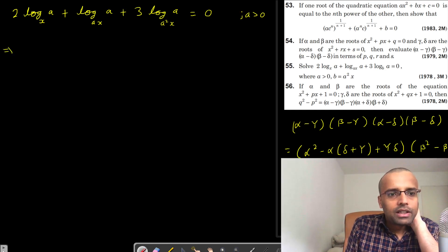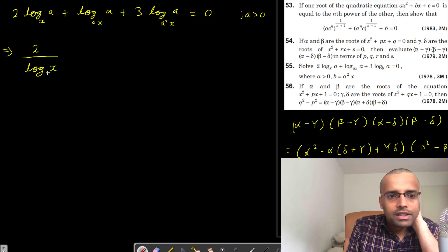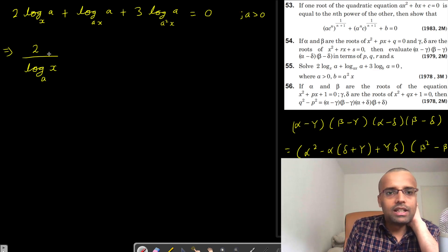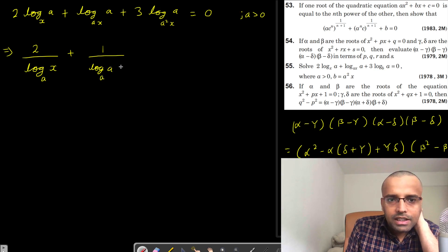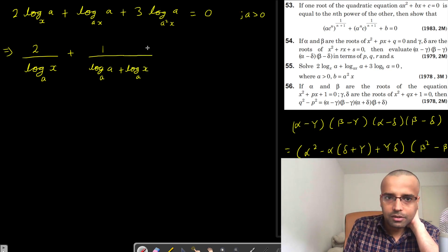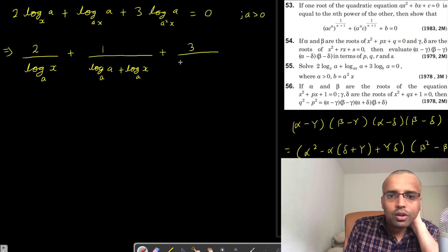So what can I write here? 2 divided by log of x to the base a — we are doing this so that all the bases will be a. Plus 1 over log of ax to the base a. Now, log of ax to the base a can be written as log of a to the base a plus log of x to the base a. Plus 3 divided by log of a squared to the base a.